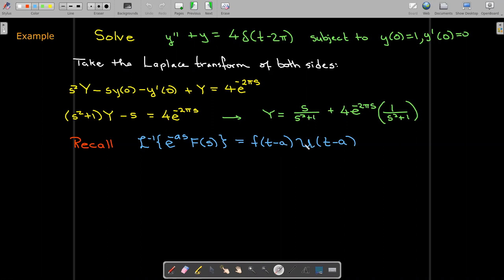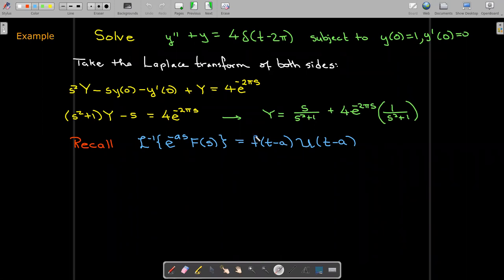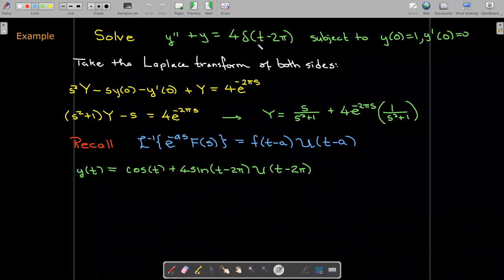Remember that by taking this product what it means is the function lowercase f is zeroed out. It's turned off until we reach the value where t equals a and then it gets turned on. So let's use that formula.